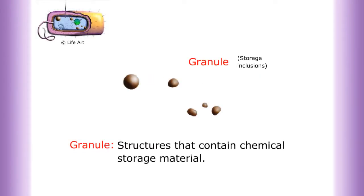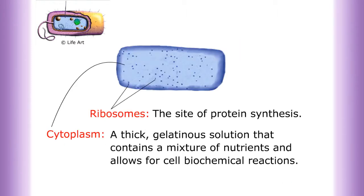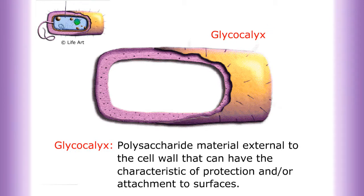The components include granules, structures that contain chemical storage material; chromatin body, tightly coiled DNA that contains the genetic information of the bacterium; ribosomes, the site of protein synthesis; and cytoplasm, a thick gelatinous solution that contains a mixture of nutrients and allows for cell biochemical reactions.